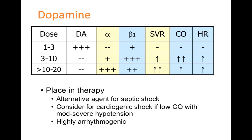Dopamine may also be used in cardiogenic shock because of its beta-1 inotropic effects, and some alpha activity can help patients with severe cardiogenic shock who also present with moderate to severe hypotension. One important note: dopamine tends to be highly arrhythmogenic, particularly causing tachyarrhythmias due to its strong beta effects. Patients may need to discontinue because they don't tolerate the increase in heart rate.